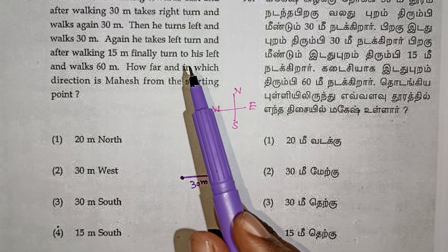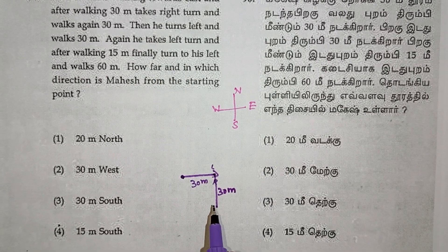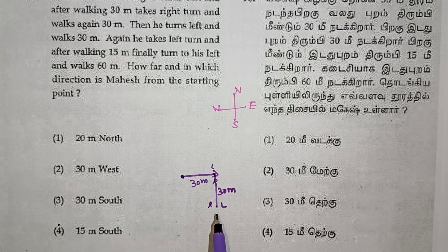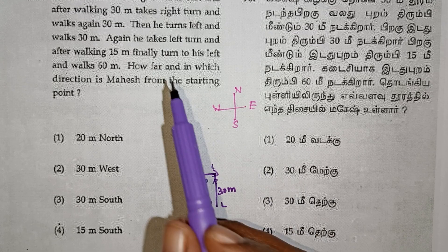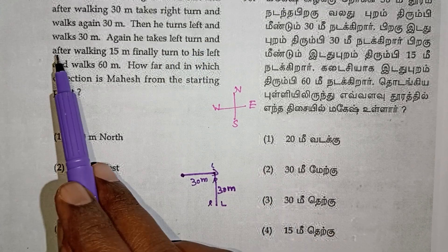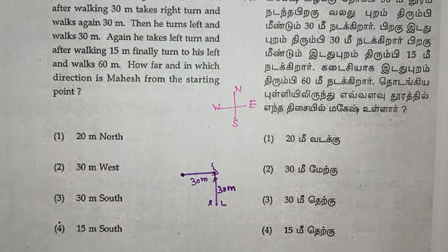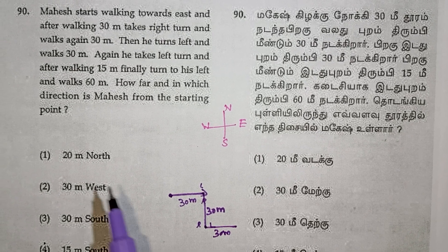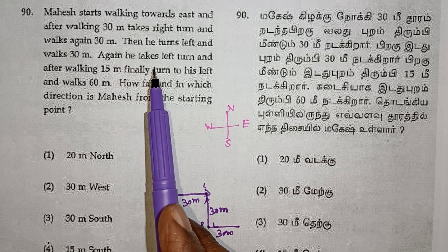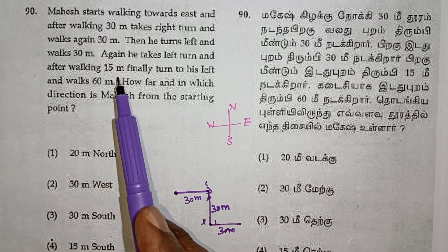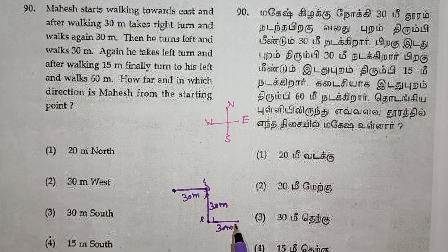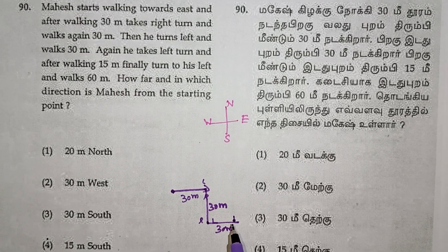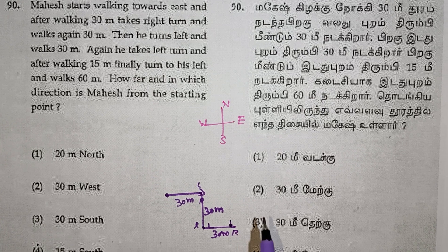Then he turns left — left hand side. Right hand, 30 meters walk. Left hand side. Again he turns left and walks 15 meters — left hand side, 15 meters.